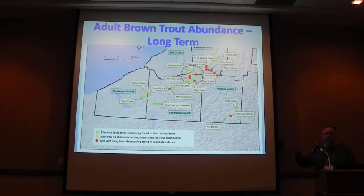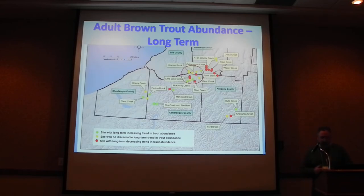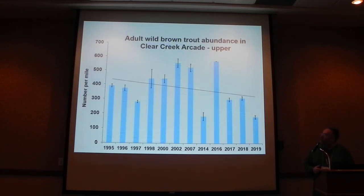Moving up into the Upper Cattaraugus Creek watershed, where we have quite a few of these streams, it's a real mixture. We've got a few increasing streams — Lime Lake Outlet, McKinstry Creek show some increases — some decreasing, and a bunch with no clear trend. A lot of variety, with ups and downs depending on the year.